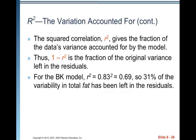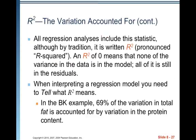All regression analyses include this statistic, although by tradition it's written capital R squared, pronounced R squared. An R squared of 0 means that none of the variance in the data is in the model. All of it is still in the residuals, and your model is terrible. And we do call this the coefficient of determination.